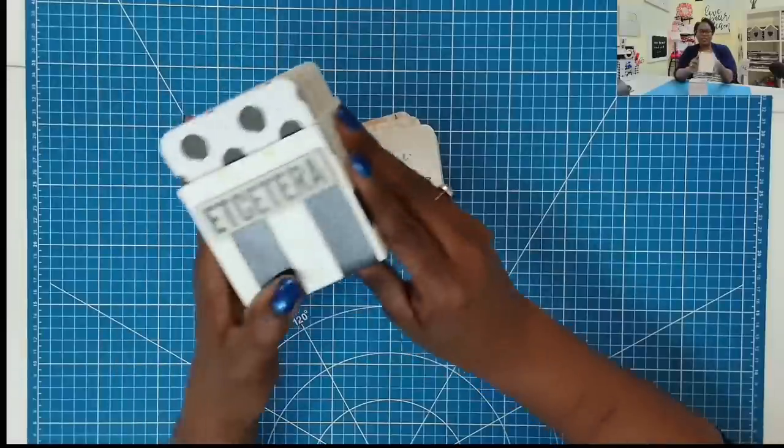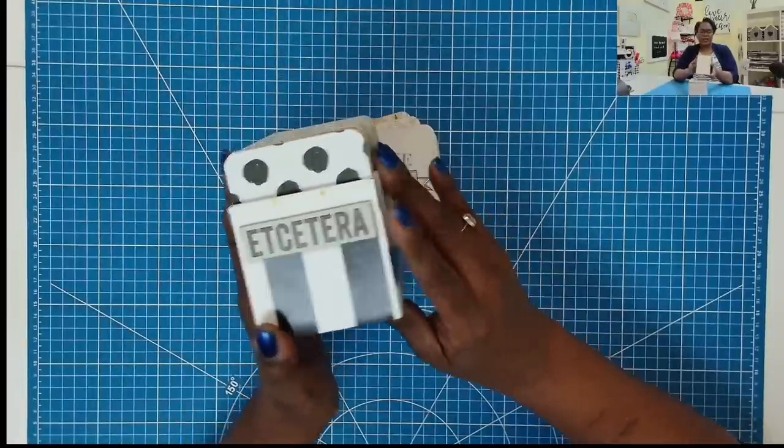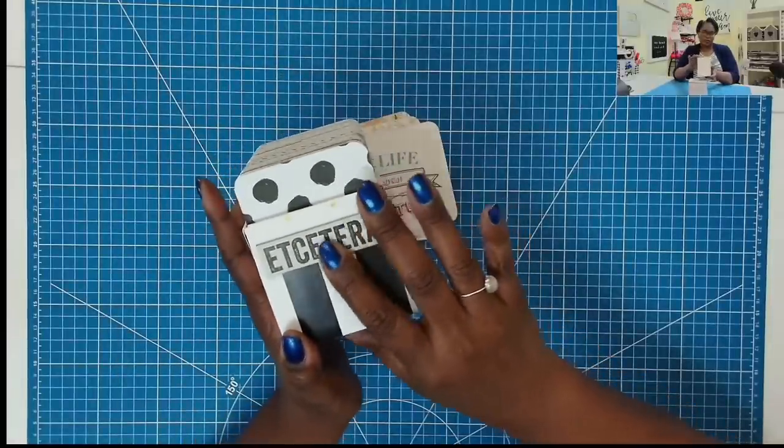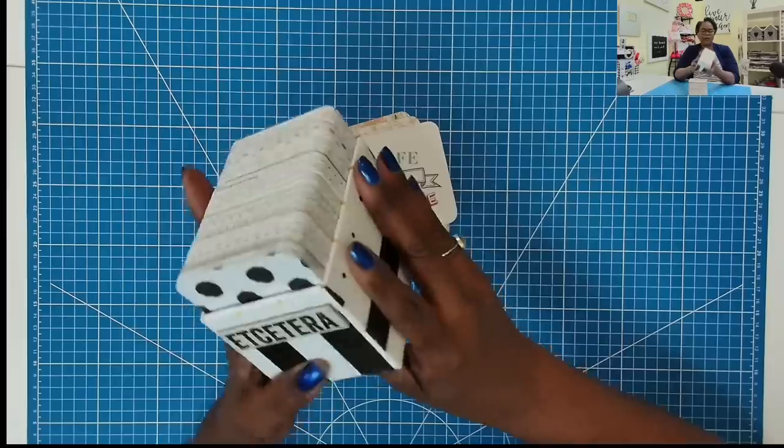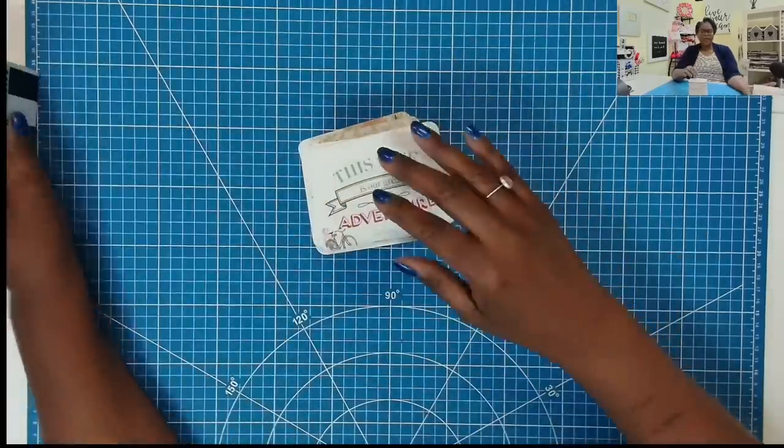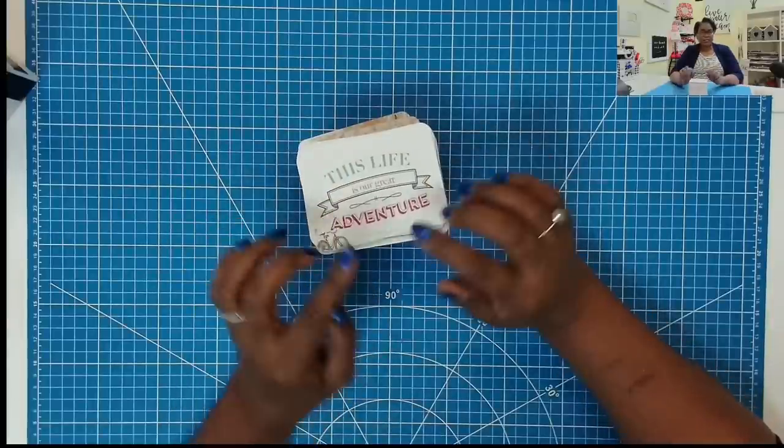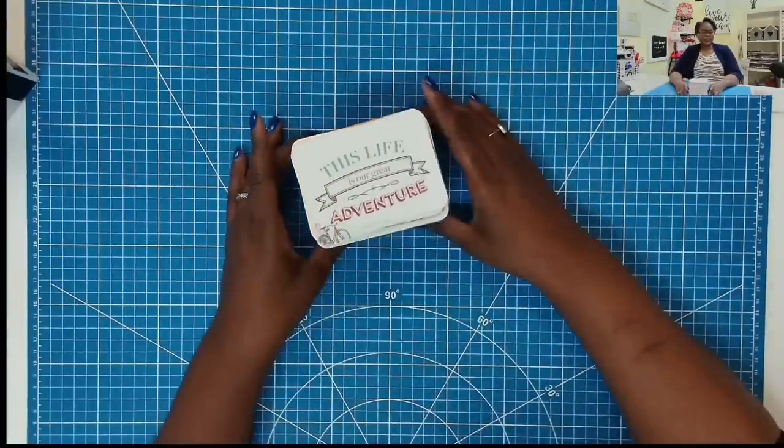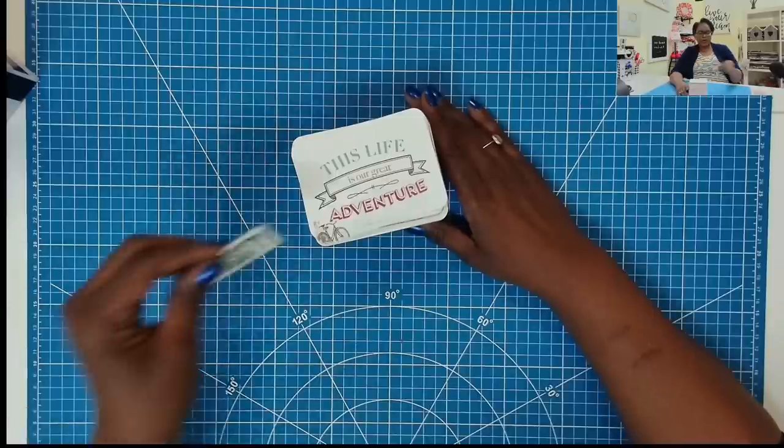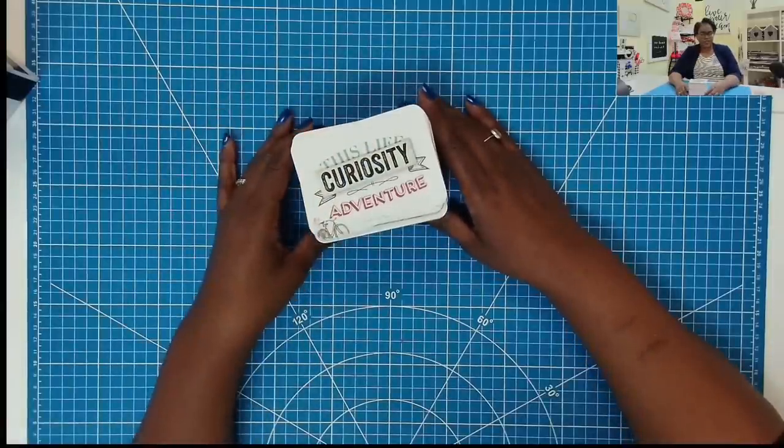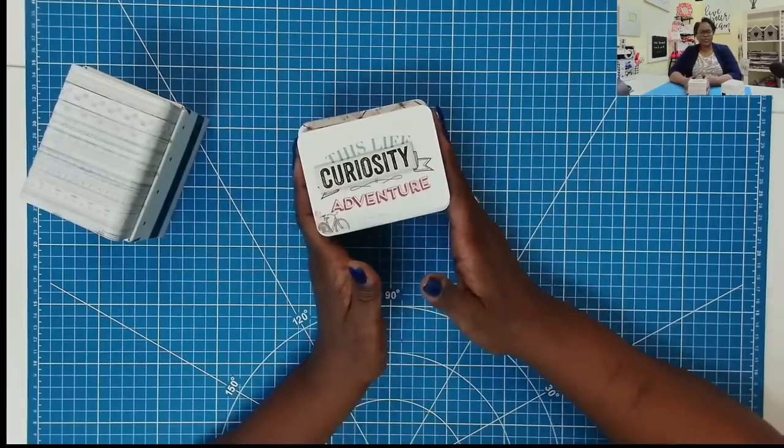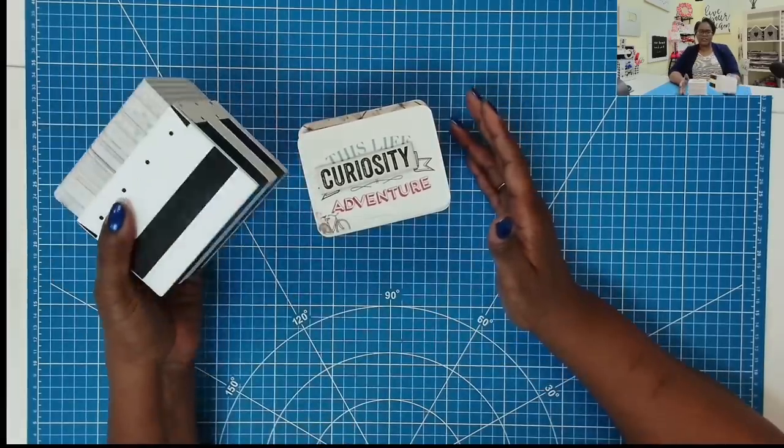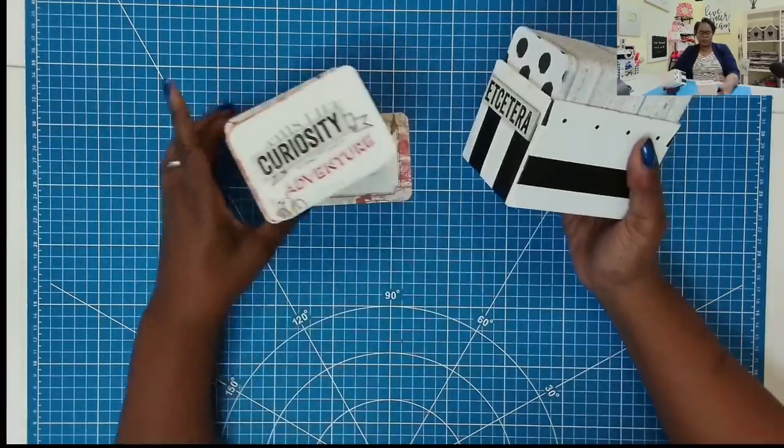This box, I labeled it etc. using some of those Tim Holtz chipboard word stickers because it's a bunch of this and a bunch of that. This particular box is all about traveling and adventure and embracing life. So we are going to label this one as my little curiosity box and you're going to see just how easy it is to make this nice little chipboard box.